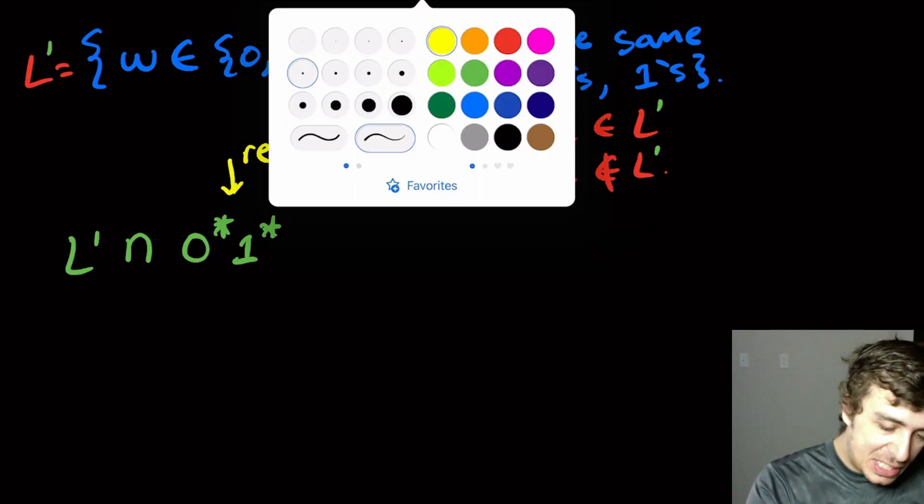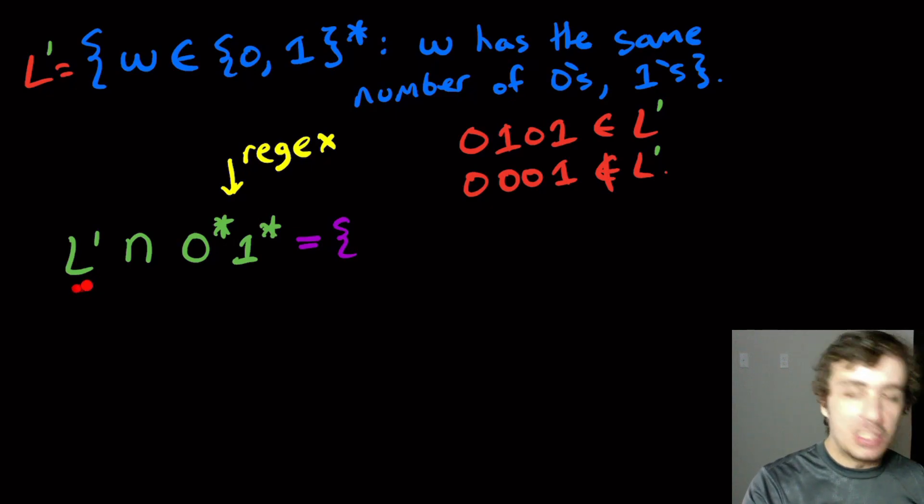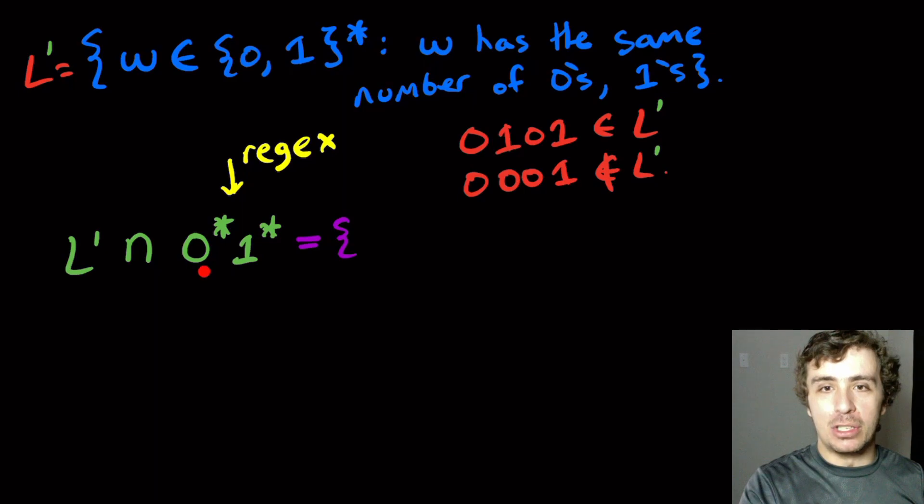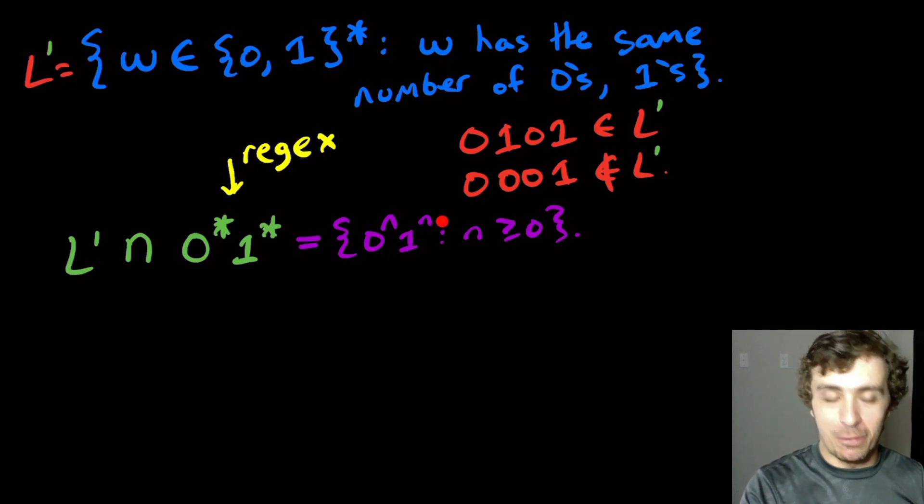But what is this thing? Well, what is this set? Well, it's the set of all strings that have the same number of zeros and ones, and the zeros come first, and then the ones second. Well, that's just 0^n 1^n.